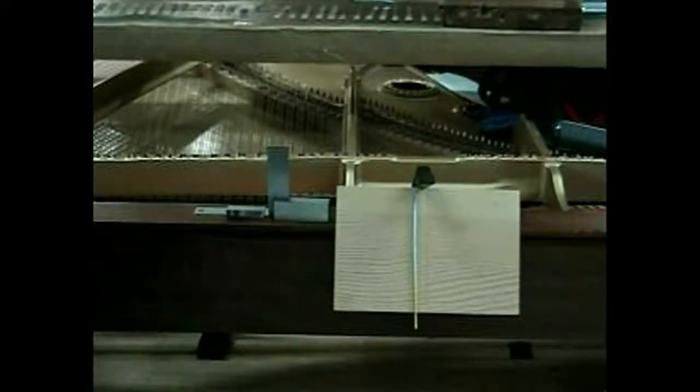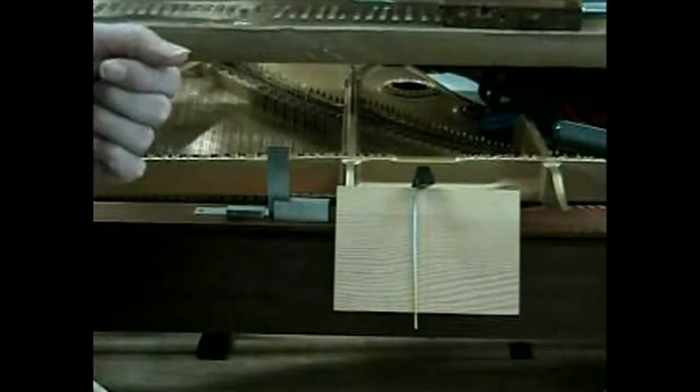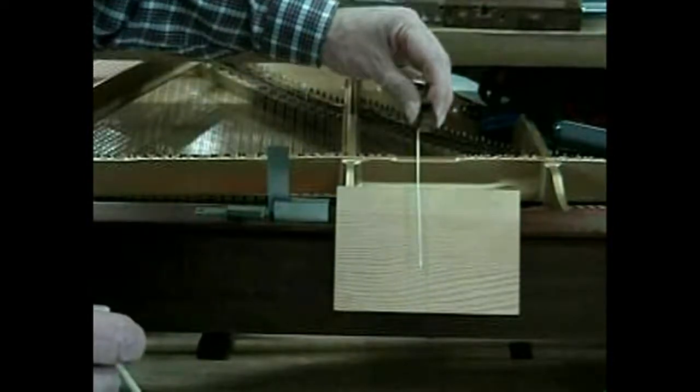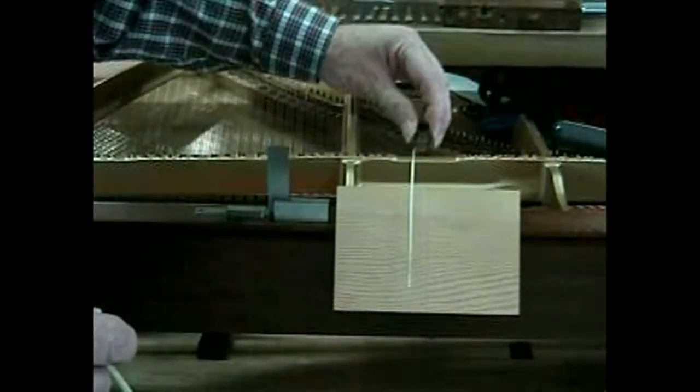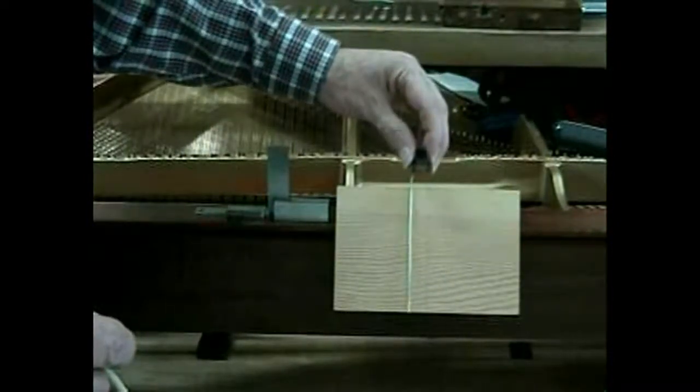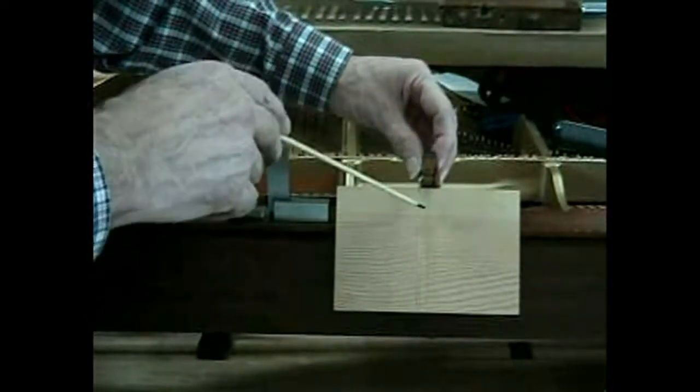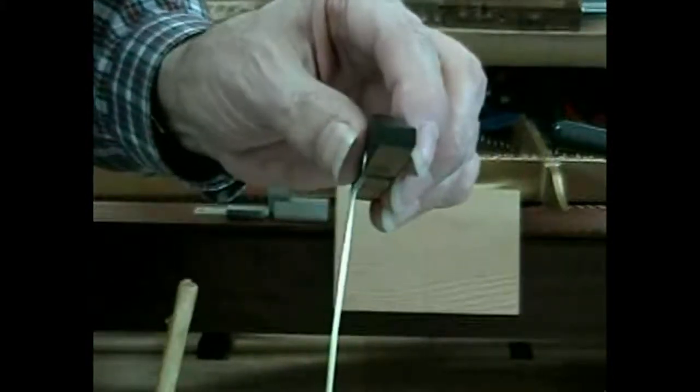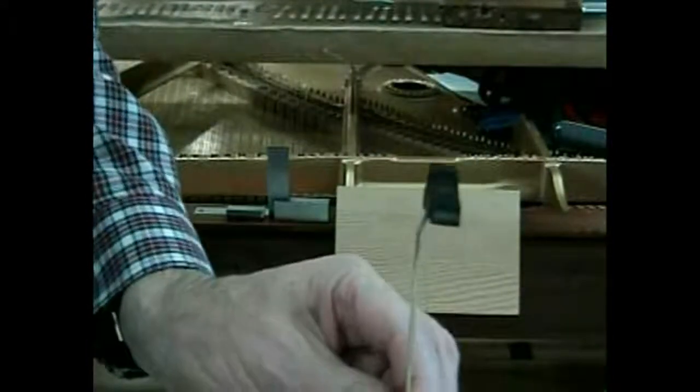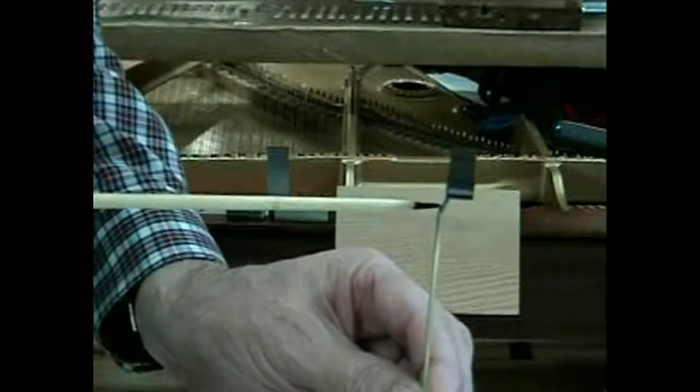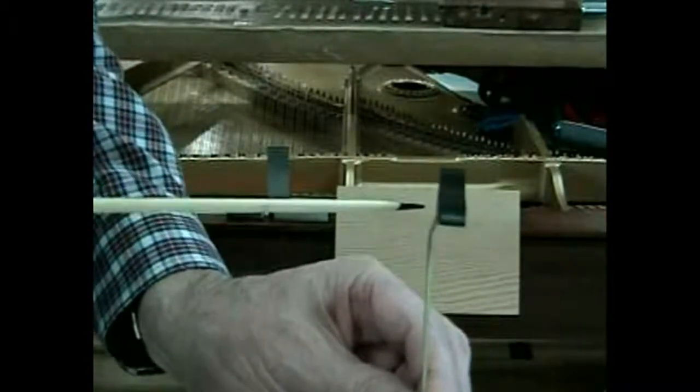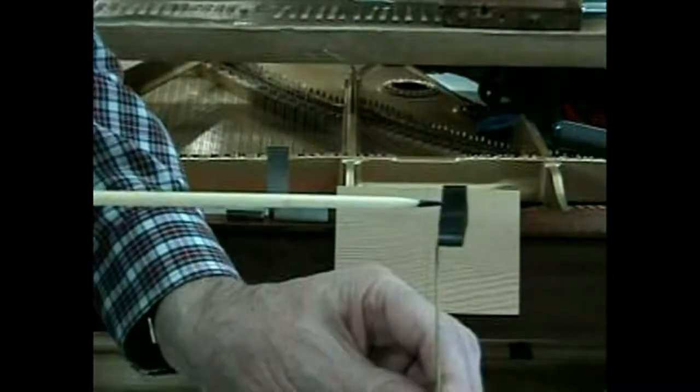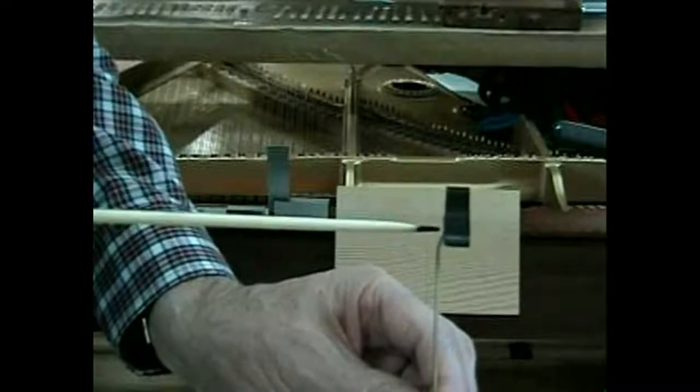Now there are three orientations that are critical. Travel, that is how the damper travels straight up and down in the guide bushing. Squareness of the head, we've talked about that earlier. Now, this is the neck bend, and that refers to the third thing, which is spacing of the damper heads themselves in relation to the strings.